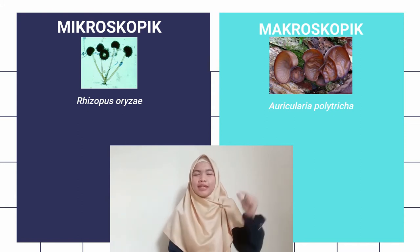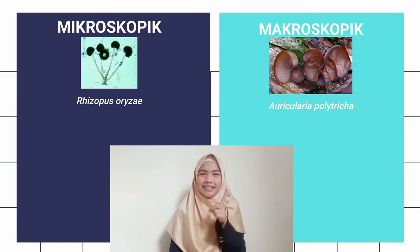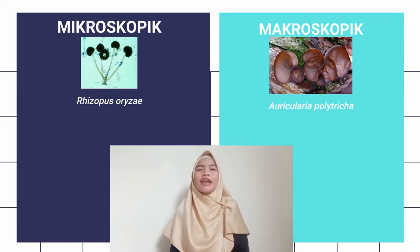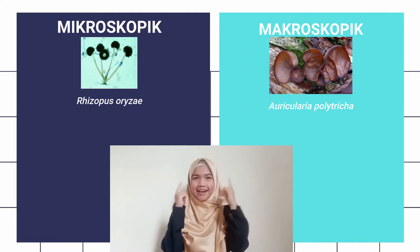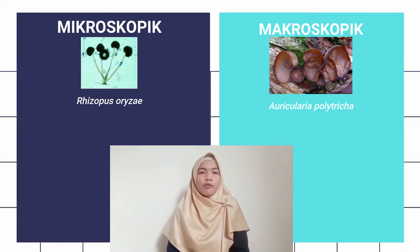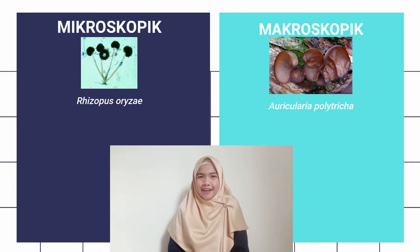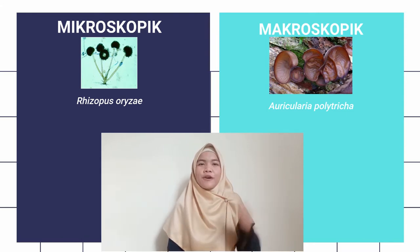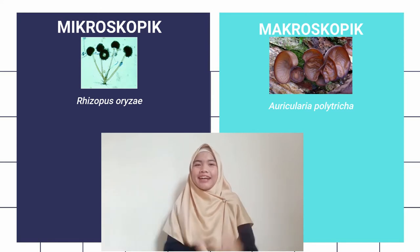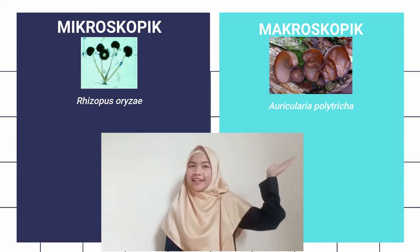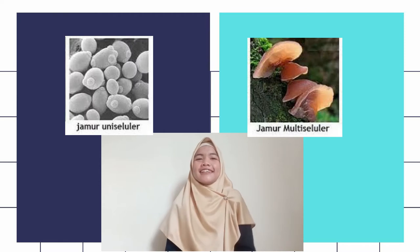Untuk jamur yang mikroskopik, itu adalah jamur yang hanya bisa dilihat dengan bantuan alat yaitu berupa mikroskop. Dan jamur yang makroskopik adalah jamur yang bisa kalian lihat secara langsung atau dengan mata telanjang. Untuk contoh jamur yang mikroskopik yaitu ada Rhizopus oryzae, atau jamur yang bisa kalian temukan pada tempe. Dan untuk jamur yang makroskopik, kalian bisa temukan yaitu jamur kuping atau bahasa latinnya Auricularia polytrica.